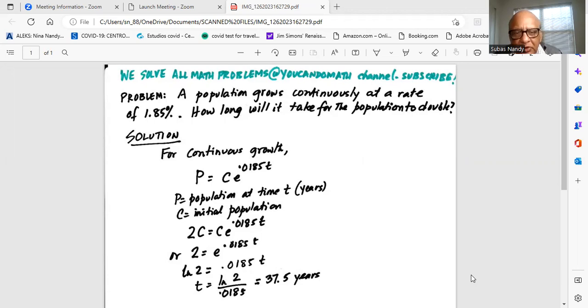So P is the population at time t in years. C is the initial population.